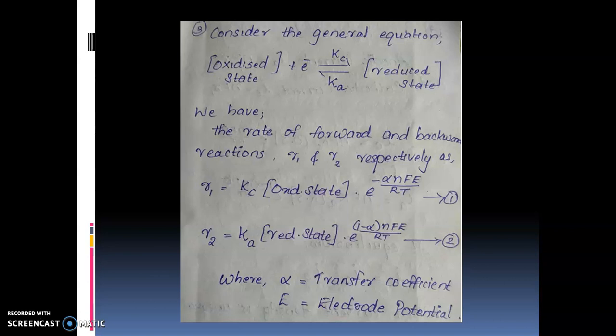The forward reaction has a rate constant and the backward reaction has a rate constant. The equilibrium constant is related to these rate constants. Using the law of mass action, the forward reaction rate R1 and backward reaction rate R2 can be written. R1 is equal to the forward rate constant kc.